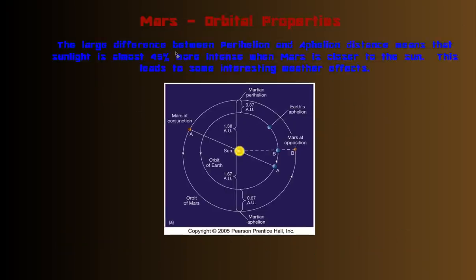This large distance between perihelion and aphelion means that sunlight is almost 45% more intense when Mars is closer to the Sun. So at this point, if you look up into the sky, if you're standing on Mars and you look up into the sky and look at the Sun, the Sun's going to be quite a bit brighter than if you were over here at Aphelion and look up at the sky. 45% more brighter. And that also leads to some interesting weather effects.